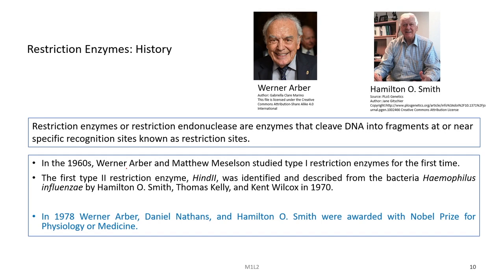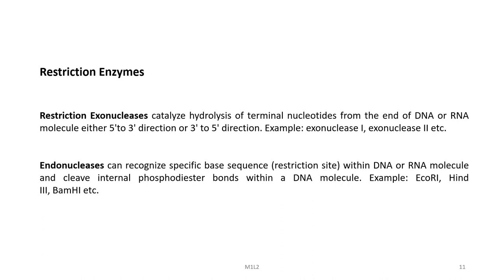In 1960, two persons — Werner Arber and Matthew Meselson — studied type one restriction enzymes for the first time. The first type 2 restriction enzyme HindII was identified and described from the bacteria Haemophilus influenzae by Hamilton O. Smith, Thomas Kelly, and Kent Wilcox after a decade, in 1970. In 1978, Werner Arber, Daniel Nathans, and Hamilton Smith were awarded the Nobel Prize for Physiology and Medicine for their discovery.